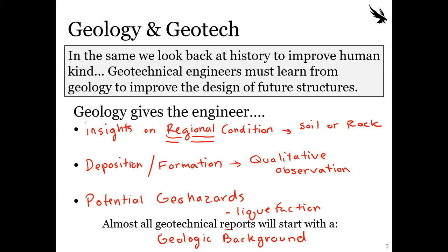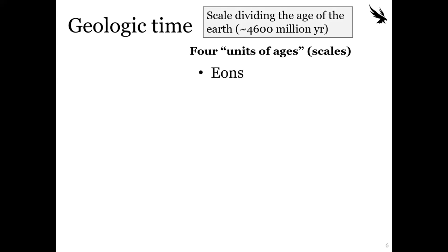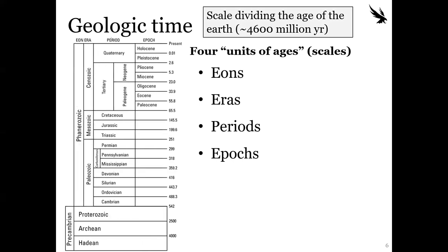Geologists view the life of the earth on a geologic time scale. They divided the age of the earth — about 4,600 million years — into four units: eons, eras, periods, and epochs. These are equivalent to saying seconds, years, months, just on a much longer scale. You've probably heard of the Jurassic period from Jurassic Park, or the Holocene epoch.